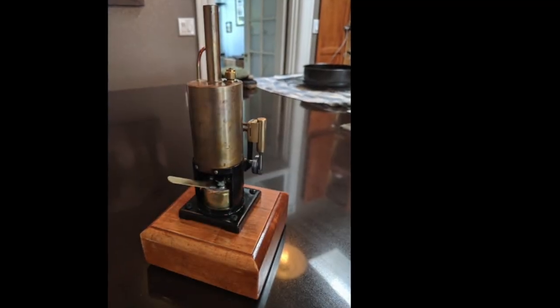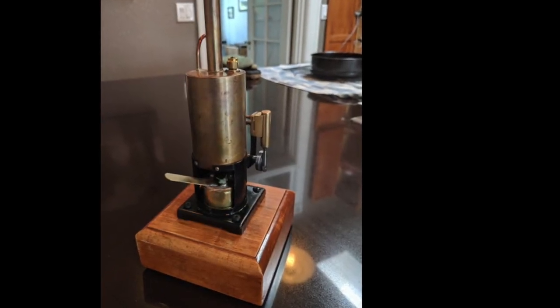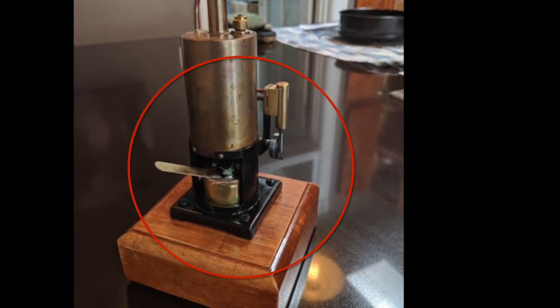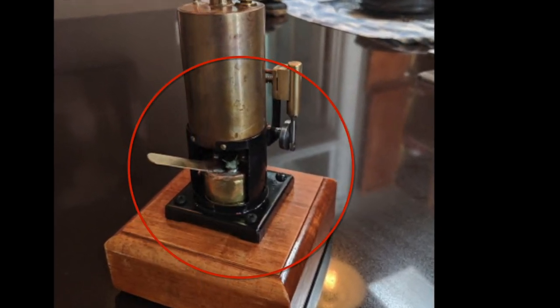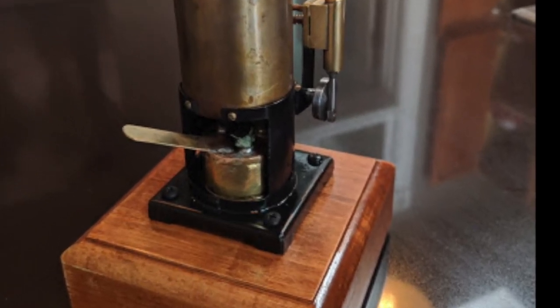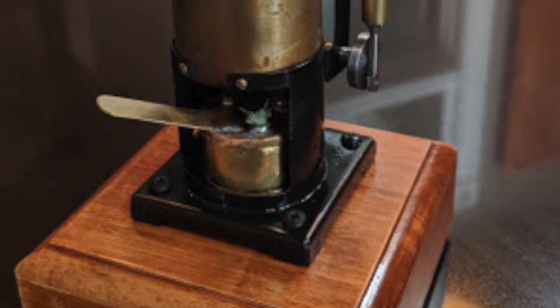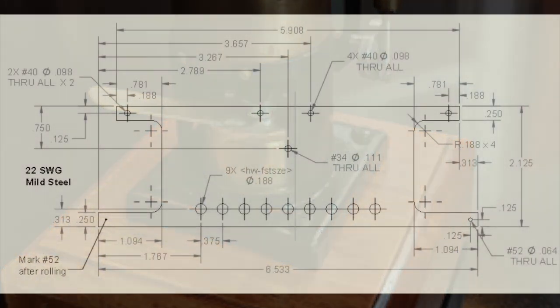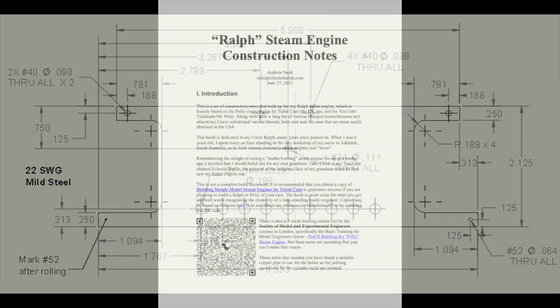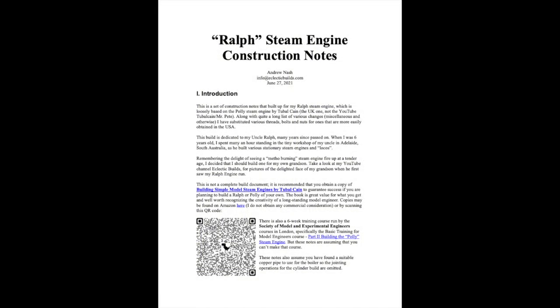This is a continuation in the video series on the Ralph steam engine. In this video, we are fabricating the firebox and stand for the steam engine. This will provide supporting structure for the boiler and provide a location for the denatured alcohol burner that we will use to provide heat for the boiler.